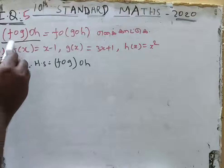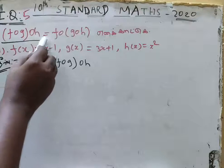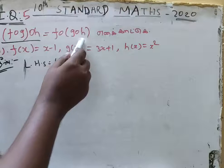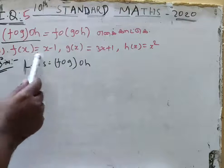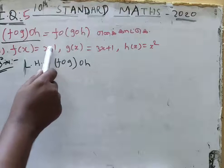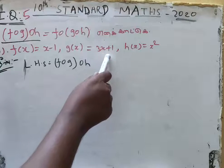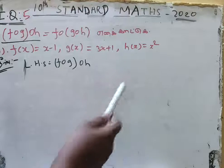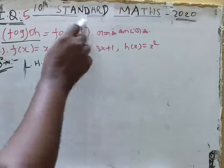This is the importance of f of g of h equal to f of g of h. This is the first evaluation question. f of x equal to x minus 1, g of x equal to 3x plus 1, and h of x equal to x squared.